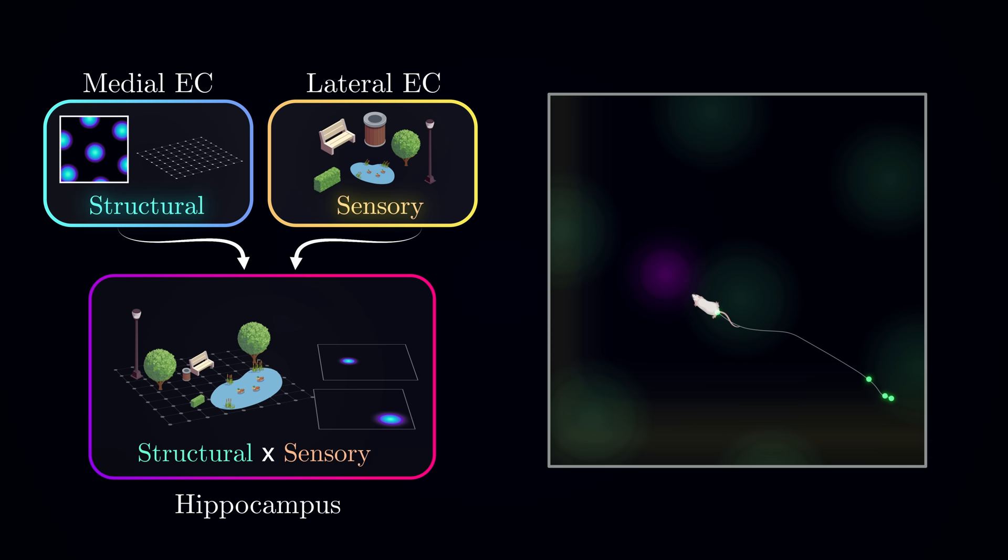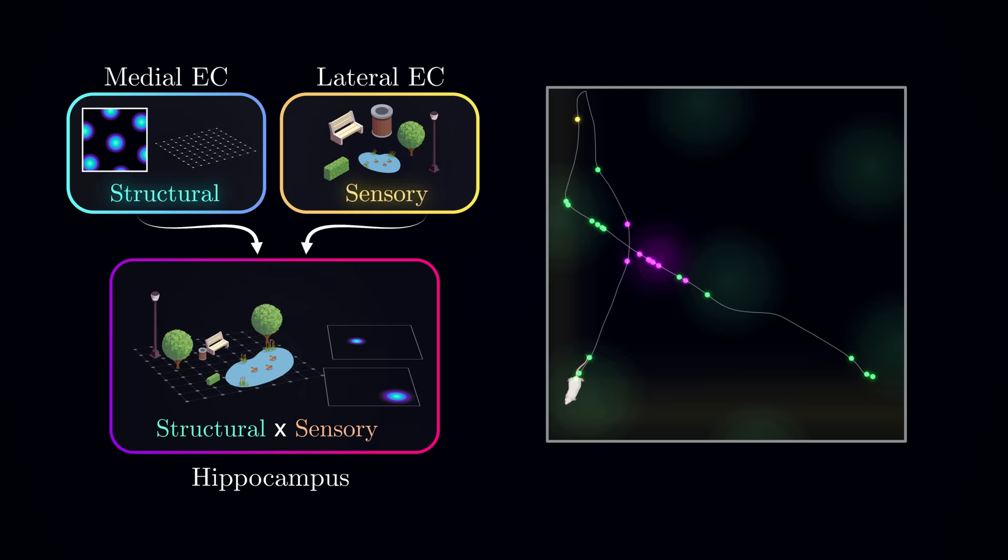As you might remember from part 1, this is exactly what the mammalian hippocampus does, and we can find neurobiological evidence for this process in the responses of individual cells. Now the question is: can we teach a machine to do the same?